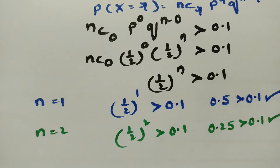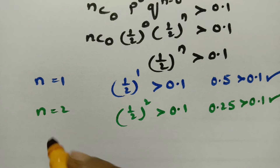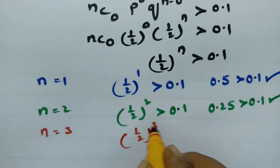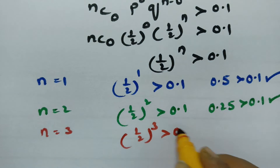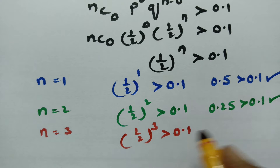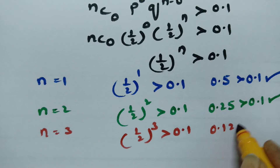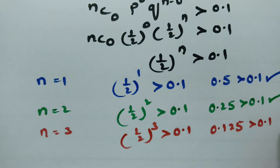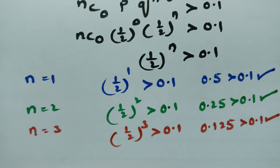If I keep n equal to 3: (1/2)^3 = 1/8 = 0.125, which is again greater than 0.1 — this is also satisfied.